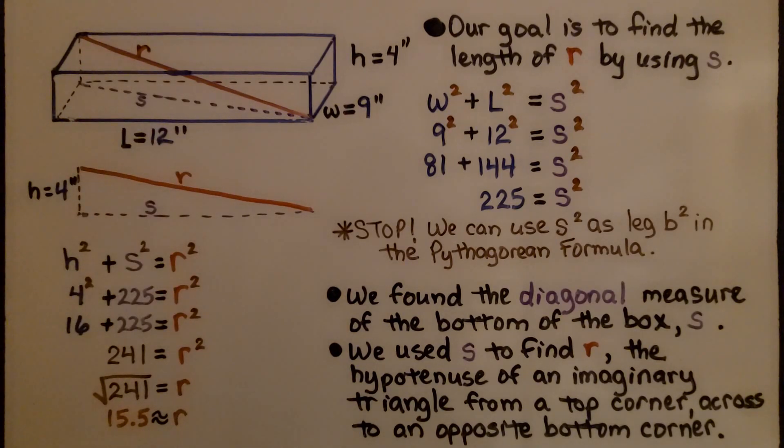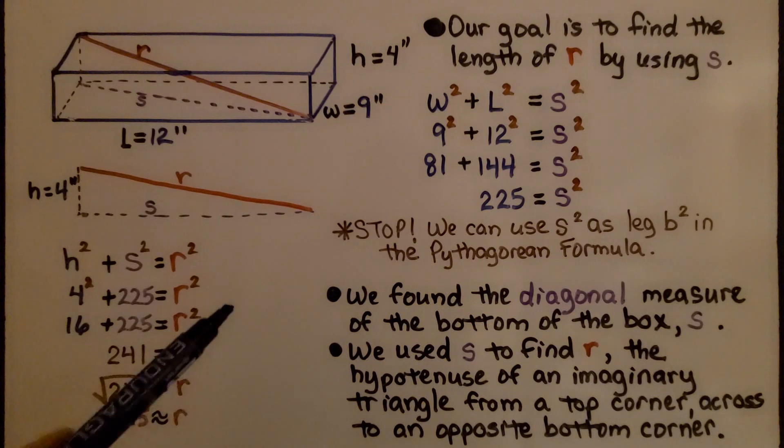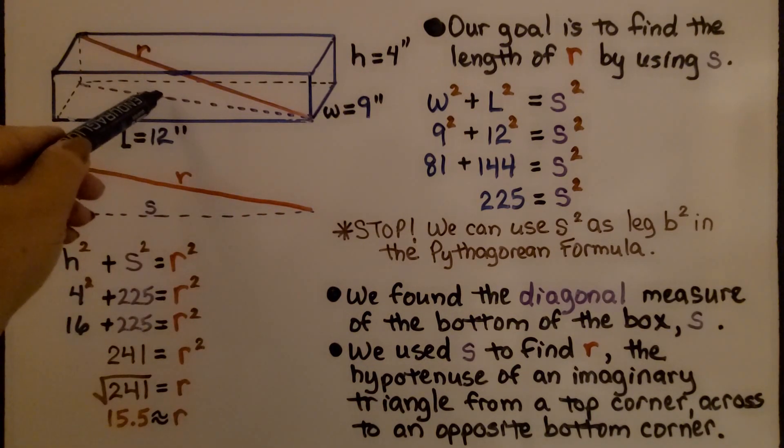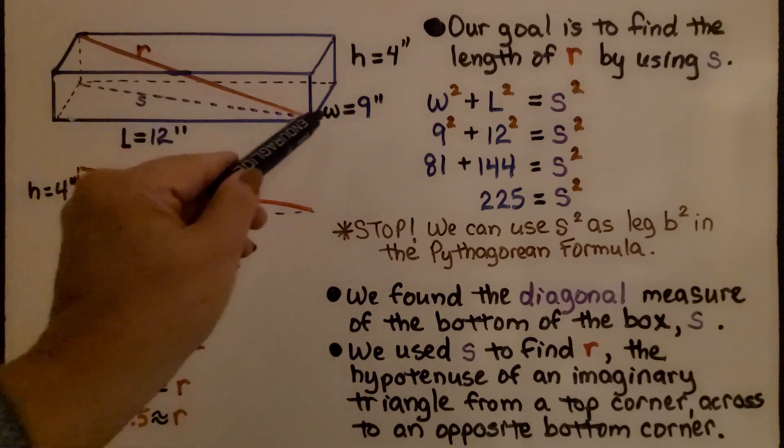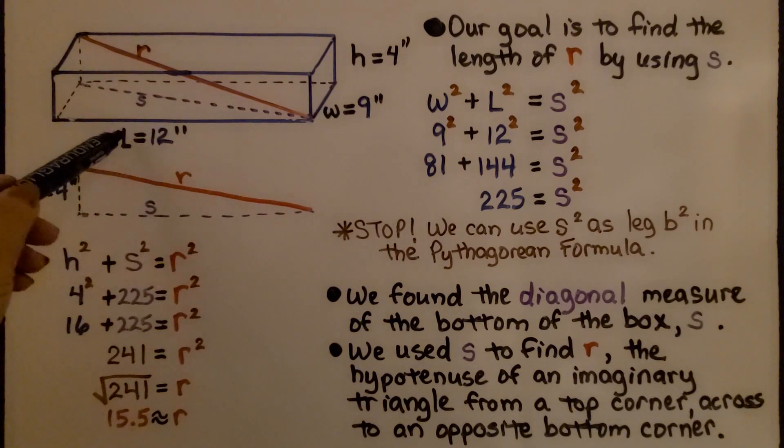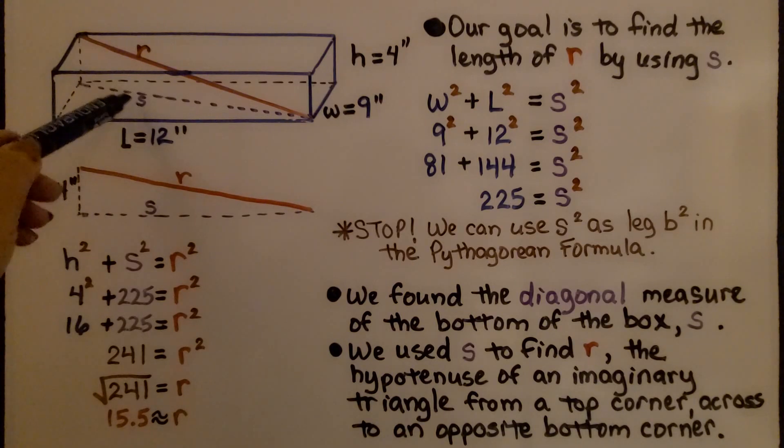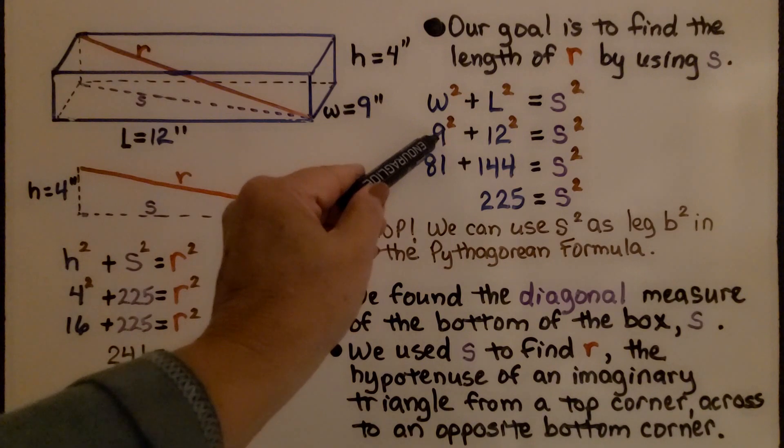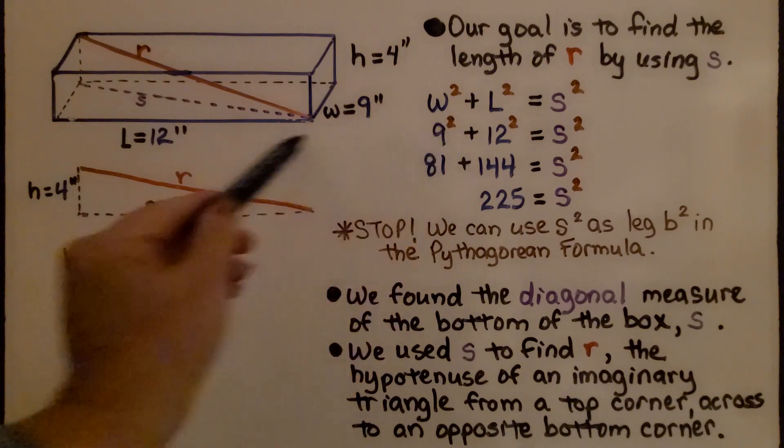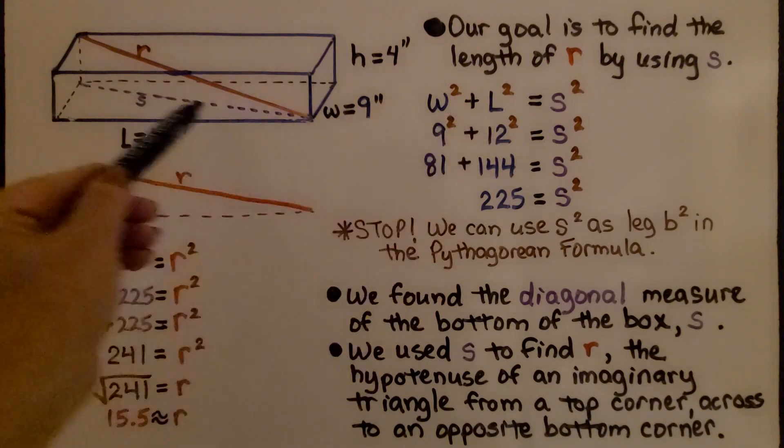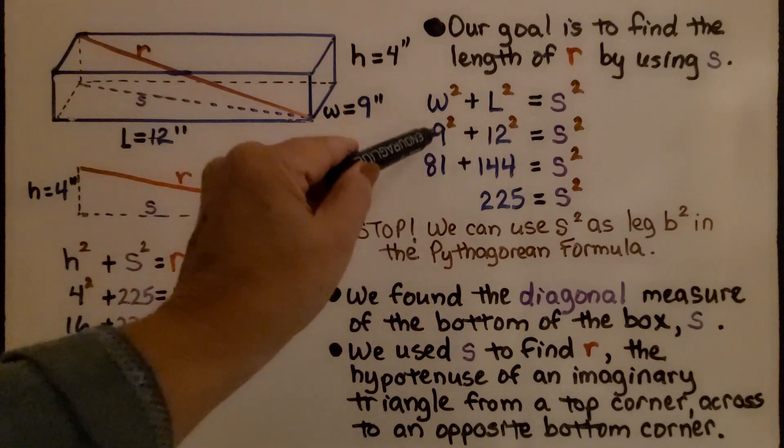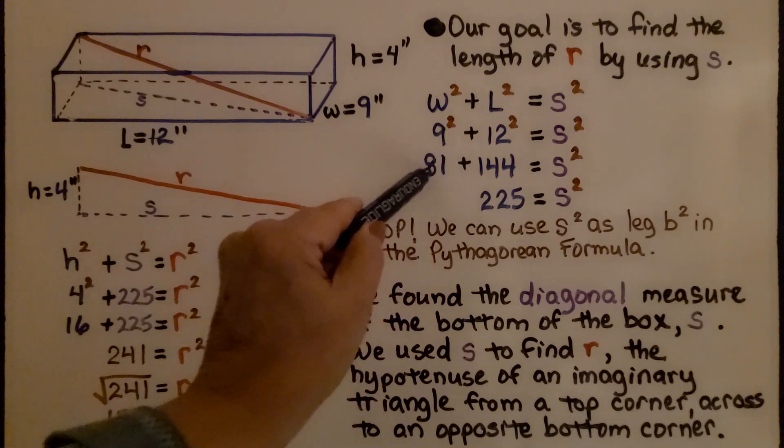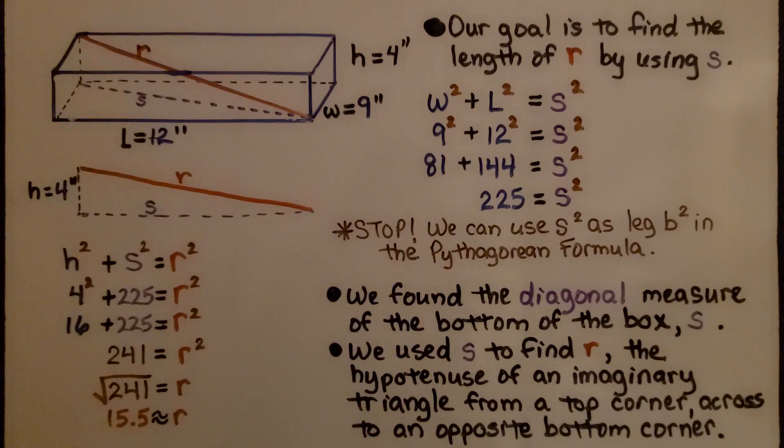So using the Pythagorean theorem, we're going to do a squared plus b squared is equal to c squared. And that's going to be w squared plus l squared is equal to s squared. We have a 9 inch width, so that's going to be 9 for the width. And we square it and we're going to do 12 squared and it's going to equal s squared. Well, 9 times 9 is 81 and 12 times 12 is 144. We add them together and get 225.